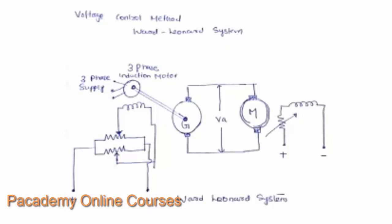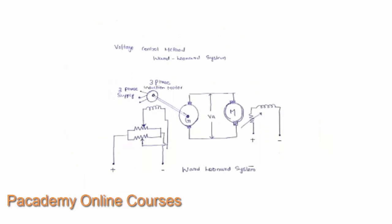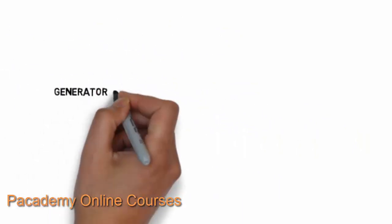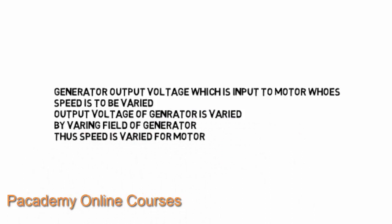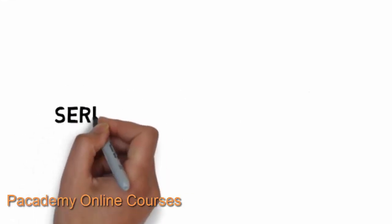In the Ward-Leonard system, there are two machines — a motor and a generator. Both are identical machines and are initially started as generators. The field of one is weakened so it becomes a motor. The generator is then driven by a three-phase induction motor. By varying the field of the generator, the output voltage of the generator — which is the input voltage to the motor — is varied. Since speed is directly proportional to (VA − IA·RA) / Φ, fine speed control of the motor is achieved. The generator output voltage is thus varied by varying the generator field, enabling precise speed control.